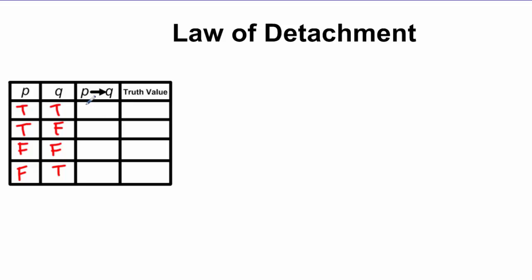If I create a conditional out of these two where the hypothesis is true and the conclusion is true, then the truth value is true. True implies false would be false; false implies false would be true; and false implies true would also be true. So there's only one case that gives a contradiction — when you have a true hypothesis and a false conclusion — and that's the only time you have a false conditional.